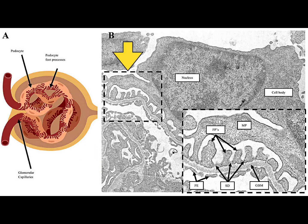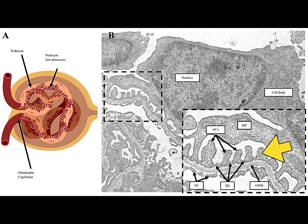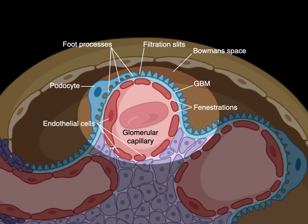Now let's take this rectangular area, blow it up at higher magnification. The foot processes are visible, and SD labels the filtration slits. FE stands for fenestrated epithelium — those are the endothelial cells — and there is the shared glomerular basement membrane. Bowman's space is where plasma ultimately goes. Plasma starts in the lumen of the glomerular capillary, filters through the fenestrations first, then through the shared glomerular basement membrane, and finally through the filtration slits of the podocyte foot processes, ending in Bowman's space as filtrate.